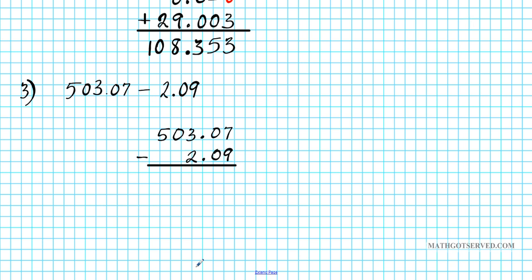So this is 0. We can't borrow anything from 0. So we have to move on to the next place value, which is 3. So we borrow 1 from 3, makes it 2. Our 0 now becomes a 10.